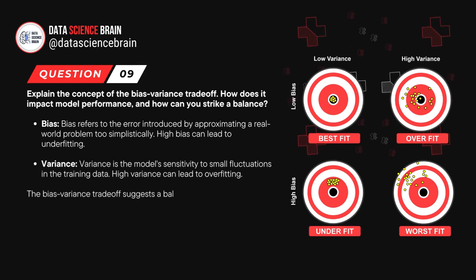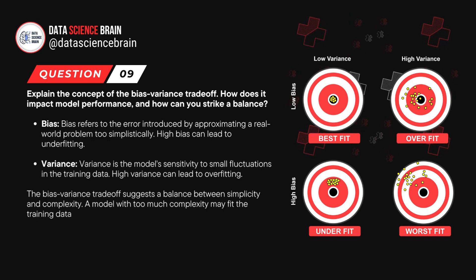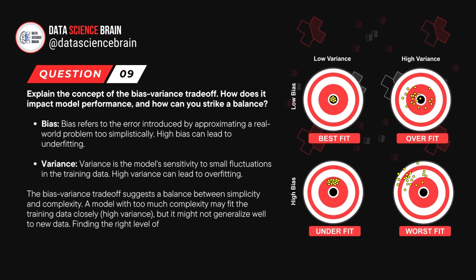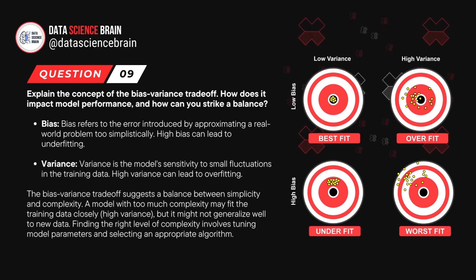The bias variance trade-off suggests that a balance between simplicity and complexity should be maintained. A model with too much complexity may fit the training data too well, but it might not generalize well to new data. Finding the right level of complexity involves tuning model parameters and selecting an appropriate algorithm.